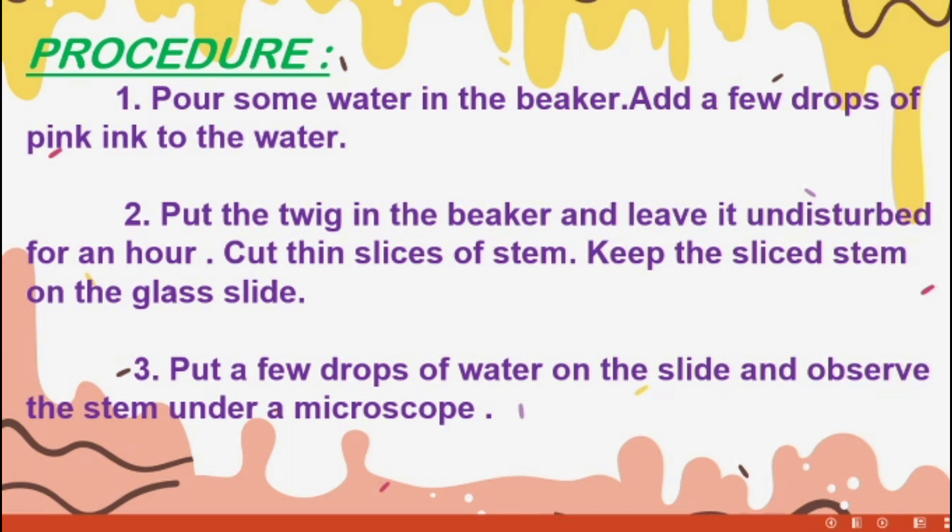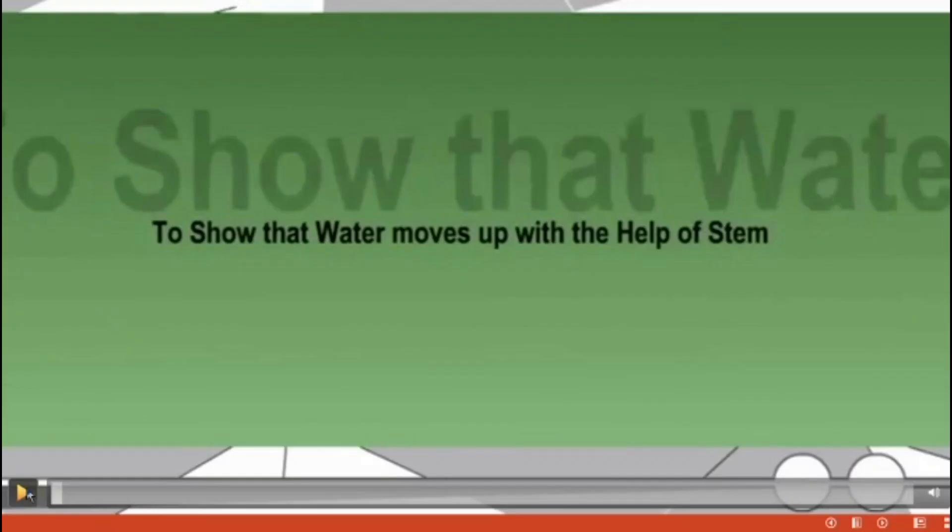Pour some water in the beaker, add a few drops of pink ink to the beaker. Second, put the twig in the beaker and leave it undisturbed for an hour. Cut thin slices of stem, keep the sliced stem on the glass slide. Put a few drops of water on the slide and observe the stem under the microscope to show that water moves up with the help of stem.